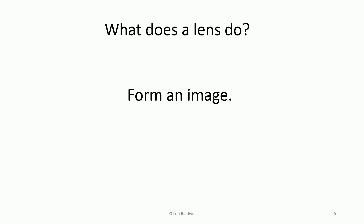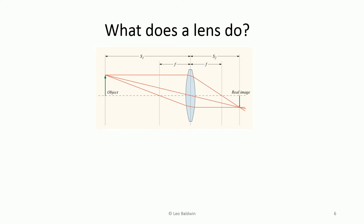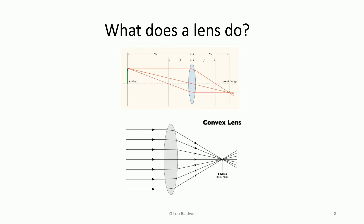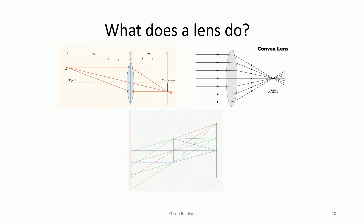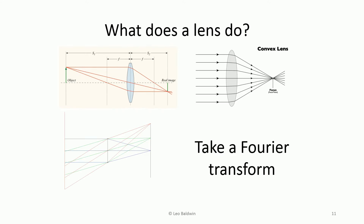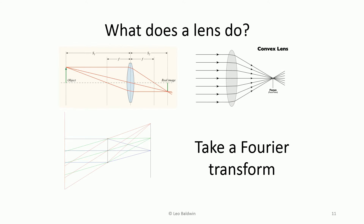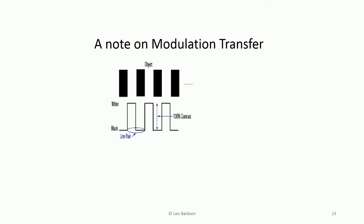So what does a lens do, fundamentally? Well, it forms an image. This is right off of Wikipedia — wiki commons — I don't want to violate any copyrights. It focuses light. If you're a kid and you gave ants the hot treatment, you know this — burned paper. It'll transform an angle into a displacement, and that's the mathematical description of a lens. A lens also takes a Fourier transform, and that will actually be relevant in this course. So we're going to talk a lot about modulation transfer — let's start with an appreciation of what modulation transfer is.